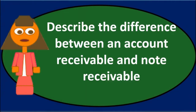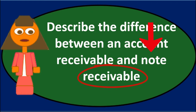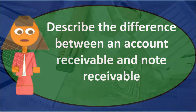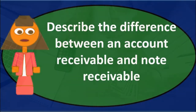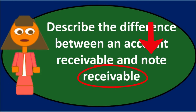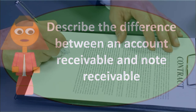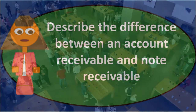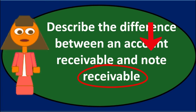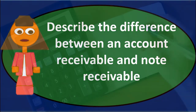Notes receivable is not going to be tracked in the same subsidiary ledger as accounts receivable, which is a list of accounts by customer that supports the accounts receivable balance. For notes receivable, we may break out a separate account for each note receivable, or we could put them all into one notes receivable account with supporting documentation similar to a subsidiary ledger, noting both the customers that owe us and the interest calculation on each note.